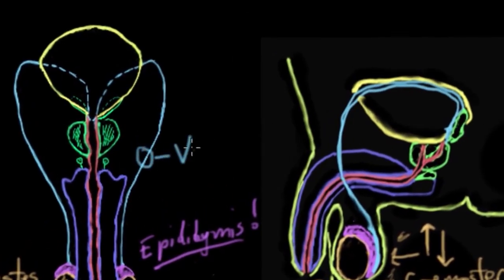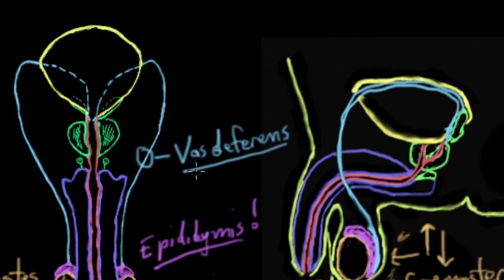From the epididymis, sperm drains out of the epididymis and into this tube called the vas deferens. The vas deferens actually drains the epididymis of sperm and brings the sperm upwards behind the bladder and into the urethra, which is the next part of the reproductive tract.